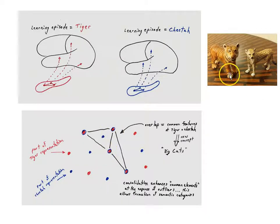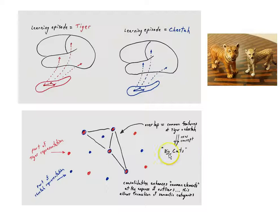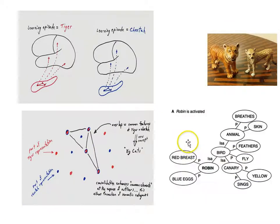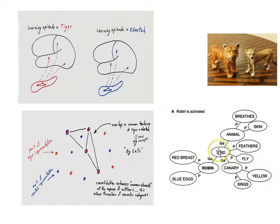The idea is that during system consolidation, the system enhances the common elements at the expense of the outliers, allowing the formation of semantic categories. The common neural elements in both representations become a way to represent what tigers and cheetahs have in common — four legs, carnivores, etc. Those overlapping neural elements can be the basis of larger categories, for example 'big cats,' which would include tigers, cheetahs, leopards, and so on. System consolidation identifies those common elements and gives us the basis for building higher-level categories.